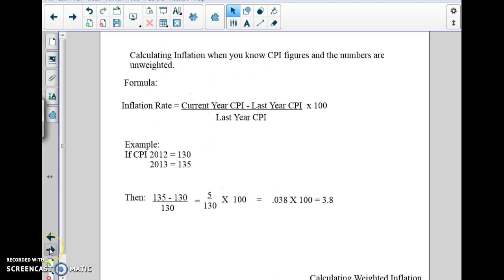Okay, so here we are. Calculating inflation. When you know your CPI figures and the numbers are unweighted, that's what you've done in the past. And we know all you need to do is have two CPIs, and you're using a percent change formula. We have it here. So you can see in this example, I gave you two different year CPIs. We just do year two minus year one over year one. We end up with, you can use your calculator for that. When we get to it, we end up with 3.8% inflation.